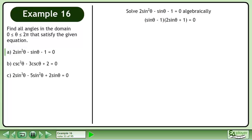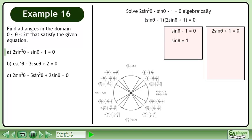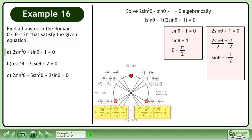Now we'll find the values of θ that satisfy the equation. Set each factor equal to 0. Isolate sinθ by adding 1 to each side. Bring up the unit circle. sinθ = 1 when θ = π/2. Moving on to the next factor, subtract 1 from each side, then divide both sides by 2. This gives us sinθ = -1/2, which occurs when θ = 7π/6 and 11π/6.